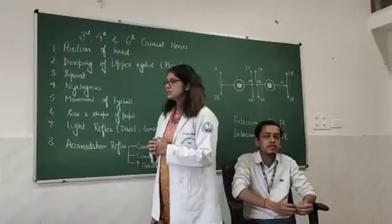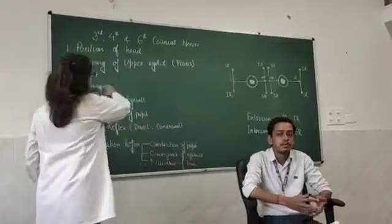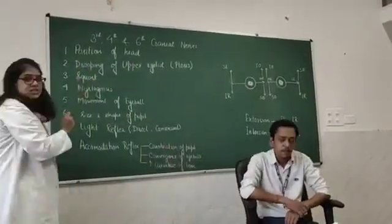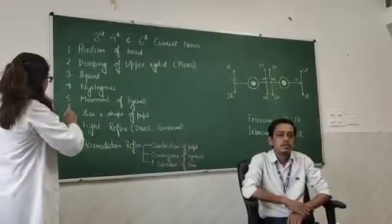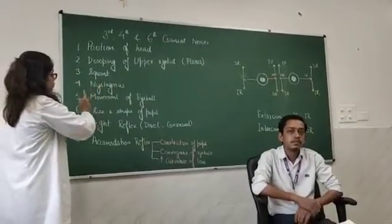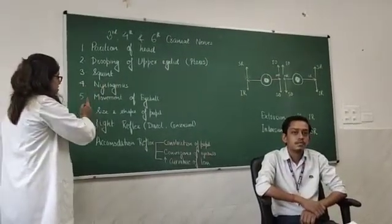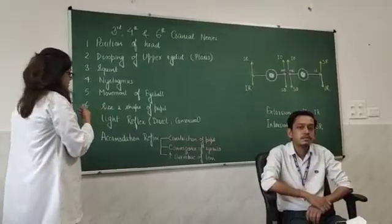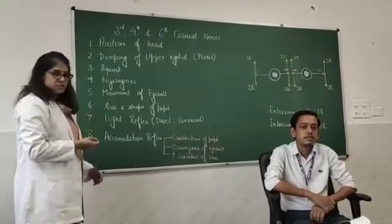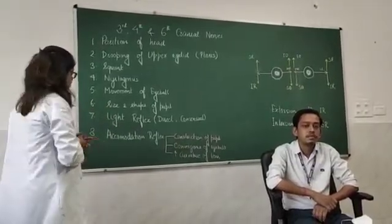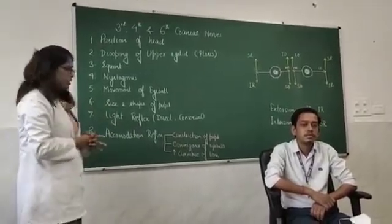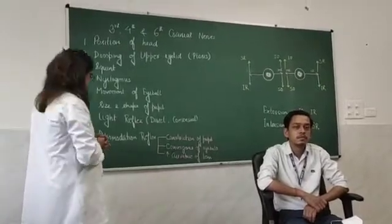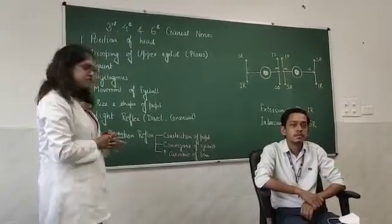We are going to perform the examination covering these points: position of head, drooping of upper eyelid, squint, nystagmus, movement of the eyeball, and size and shape of the pupil. Then we will do light reflex — direct and indirect — and then accommodation reflex.